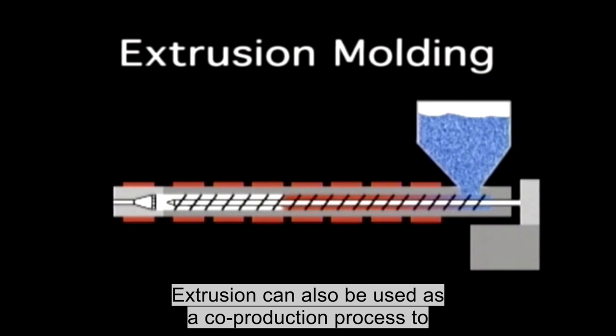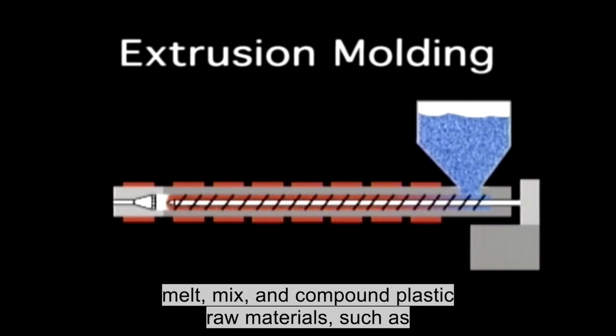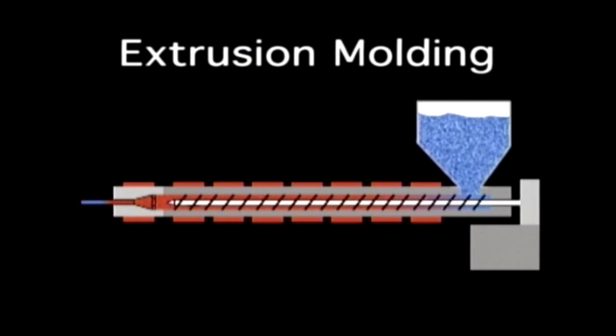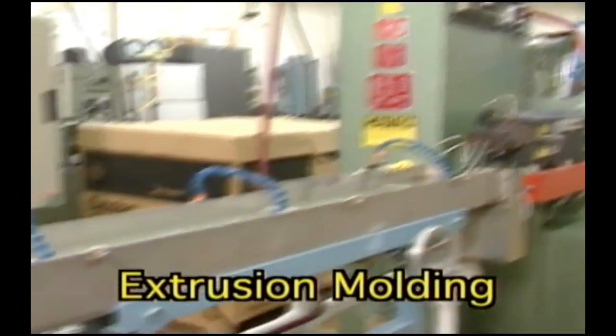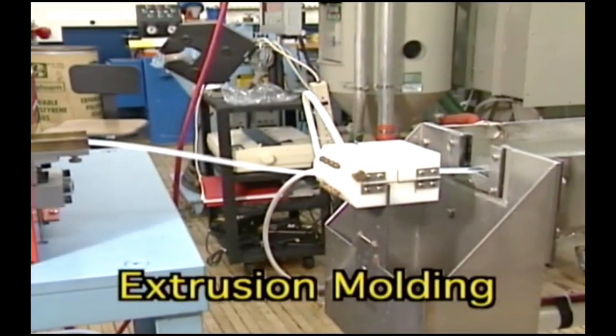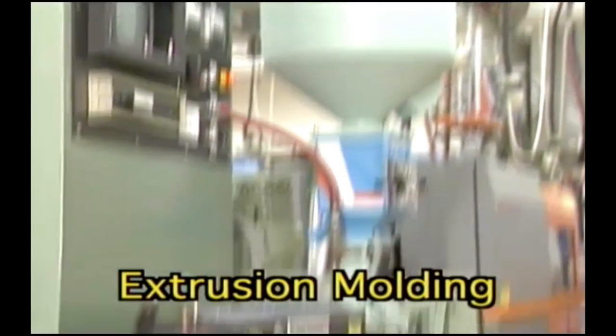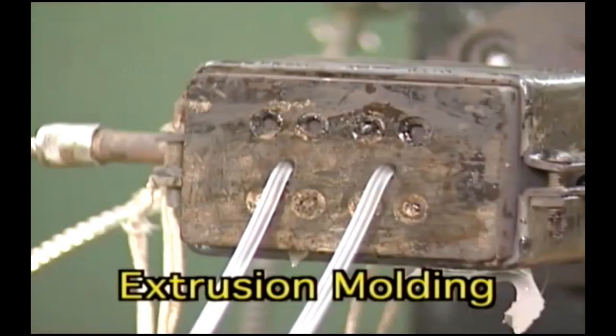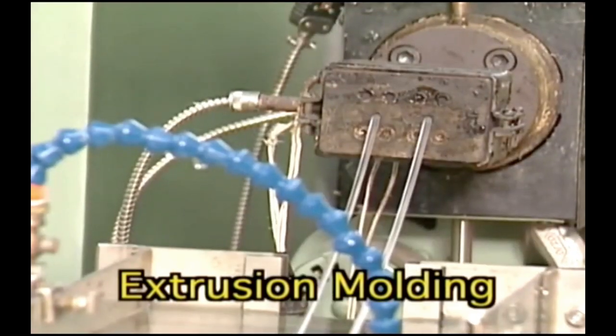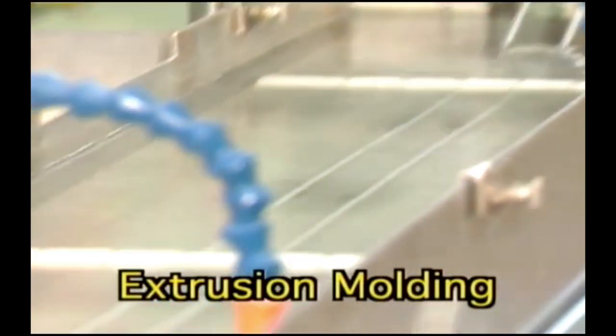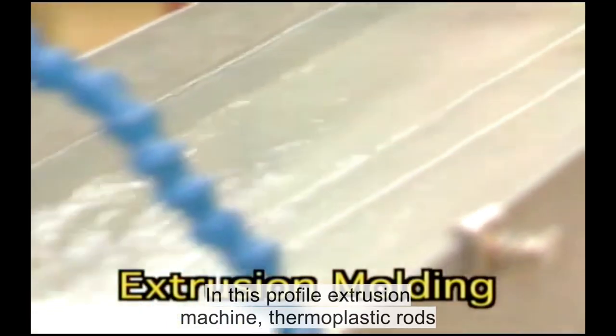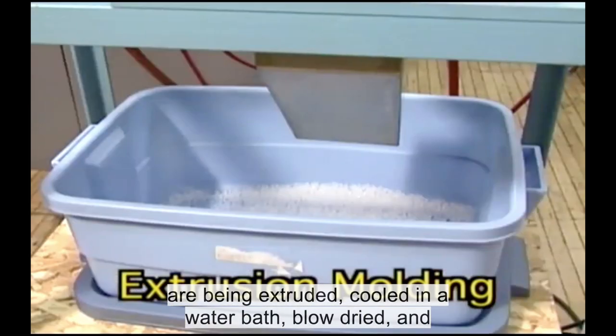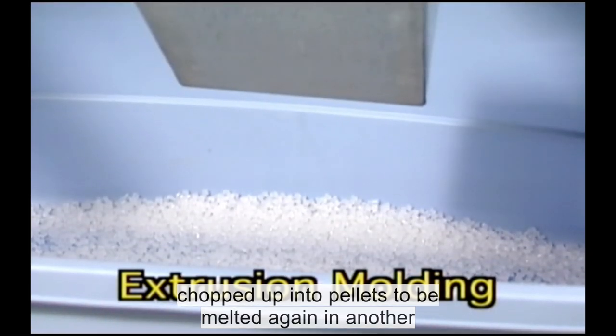Extrusion can also be used as a co-production process to melt, mix and compound plastic raw materials such as in compression molding and injection molding. In this profile extrusion machine, thermoplastic rods are being extruded by the extruder, cooled in a water bath, blow dried and chopped up into pellets to be melted again in another manufacturing process.